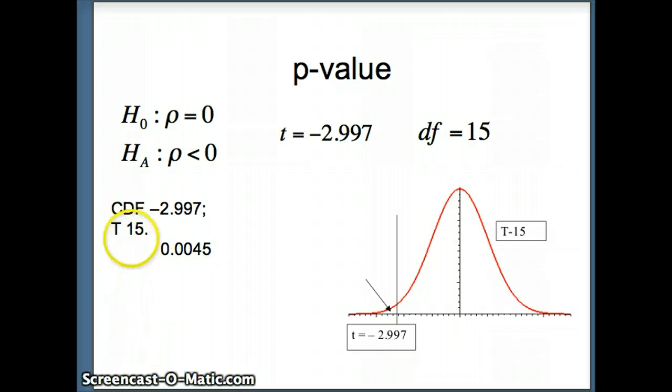We ask Minitab, CDF, negative 2.997, subcommand T15, and our result is 0.0045. So the amount of area in that little piece is 0.0045.